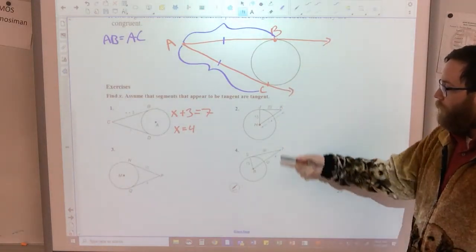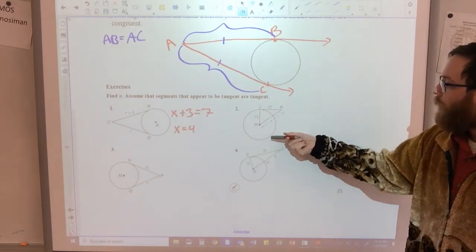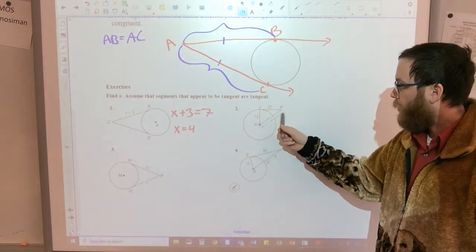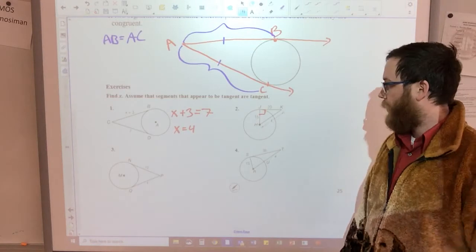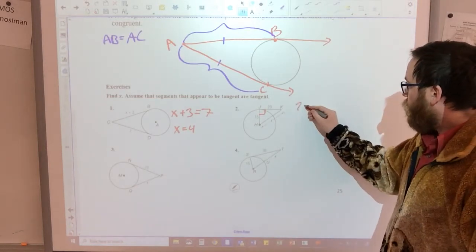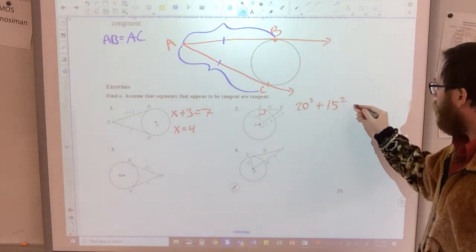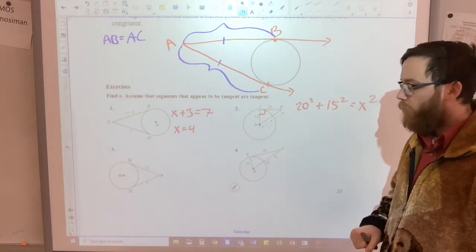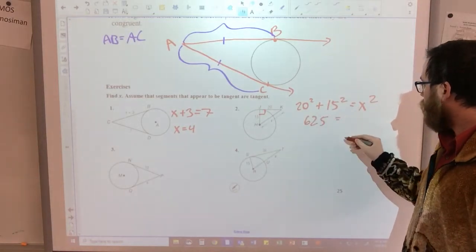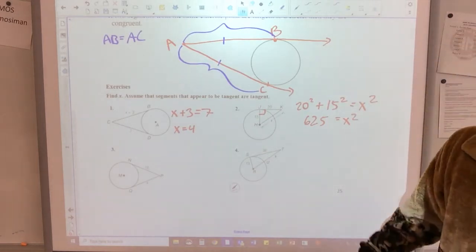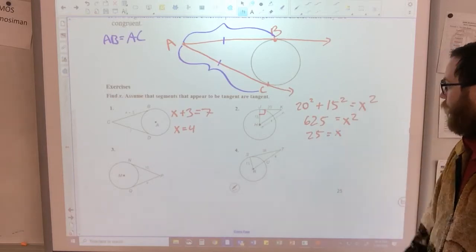Again, if we have, so we have a tangent line right here. JK is a tangent line, 15 is a radius, so that means this would be a right angle. Again, that's why I'm saying you might use Pythagorean Theorem. 20 squared plus 15 squared is equal to x squared, and you would solve that for the Pythagorean Theorem. 625 is equal to x squared, so 25, since that's the square root of 625, is equal to x.